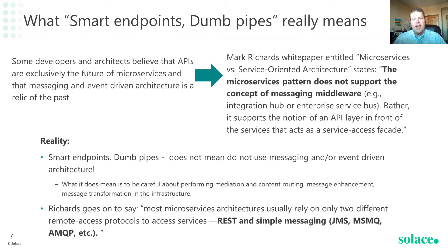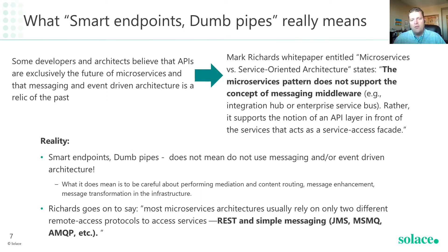In my readings of different microservices experts, I can see where they would get this viewpoint, and it comes down to the definition of messaging middleware. During the SOA hype days, messaging middleware became a big, bloated mess of different components including enterprise service buses. As we discussed, mediation logic in the network is not a great idea, so if we're talking about that, I fully agree — it should be avoided within the microservices world. But I would also claim that routing messages is not a smart pipe. API gateways do this today and that's not a contradiction. So my advice is: be careful about performing mediation — content-based routing, message enrichment, service orchestration, message transformation — in the infrastructure. Mark Richards, who says the microservices pattern does not support the concept of messaging middleware, goes on to say that REST and simple messaging, which is what event-driven really relies upon, is fine.